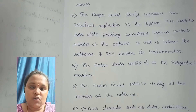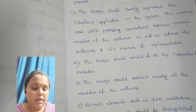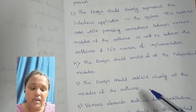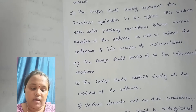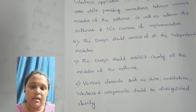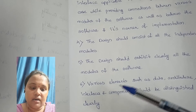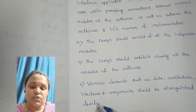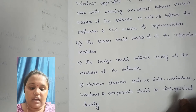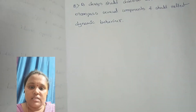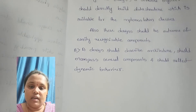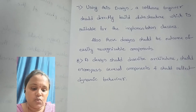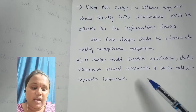The fourth guideline is that the design should consist of all independent modules. The fifth is that the design should exhibit clearly all the modules of the software. The sixth guideline is that various elements such as data, architecture, interfaces, and components should be differentiated clearly in the design. Additionally, a software engineer should directly build data structures suitable for the implementation of the classes.